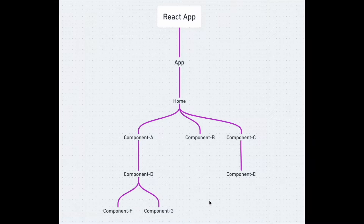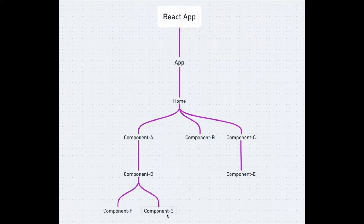Here we have a simple flow diagram to understand the concept of useContext in more detail. We have a simple React project skeleton with an App component, below which we have the Home component. Inside this Home component, we have plenty of other components ranging from component A to component G. Consider all the data within this tree is stored in the Home component. If component G needs to access the value present in the Home component, we traditionally pass the data from Home to component A, then to component D, and down to component G.